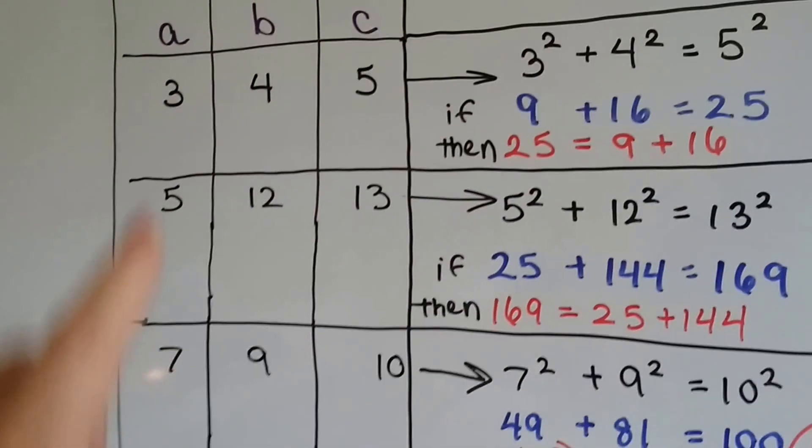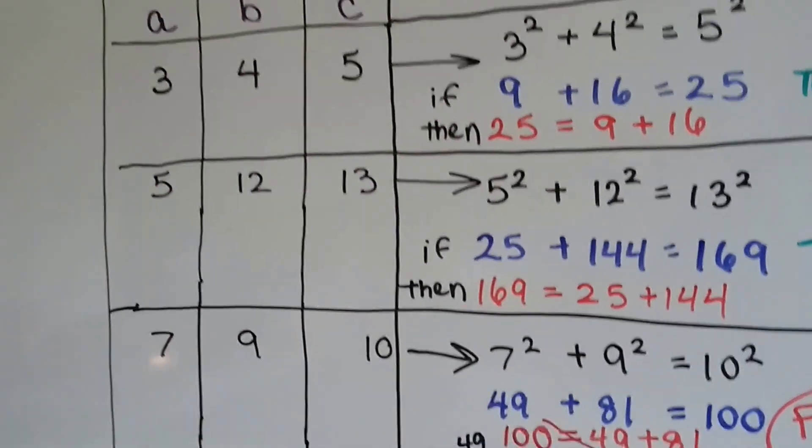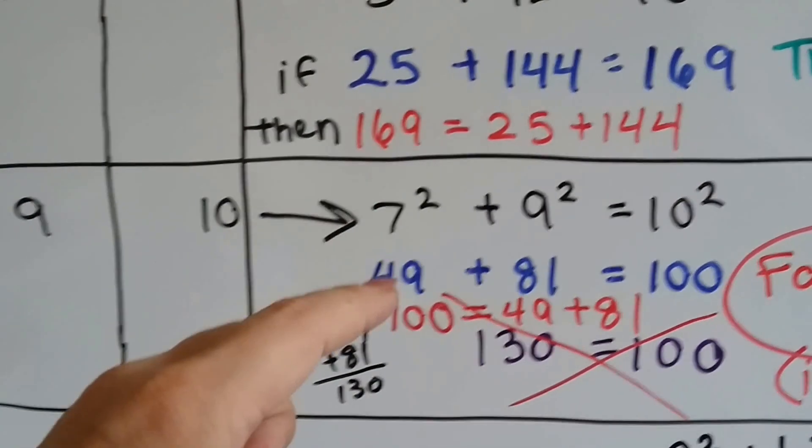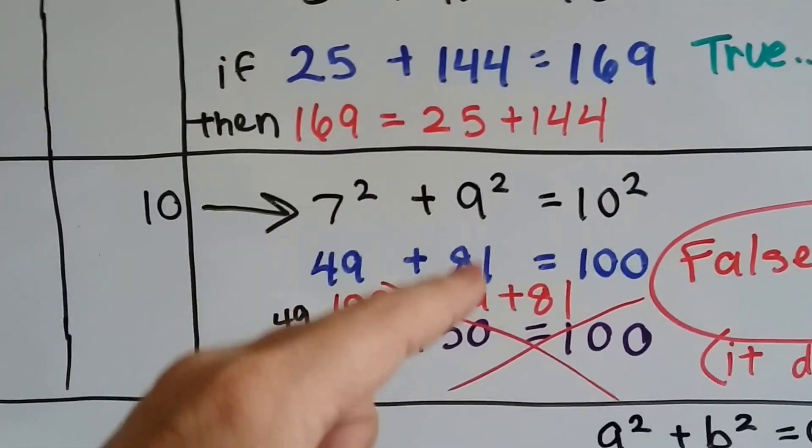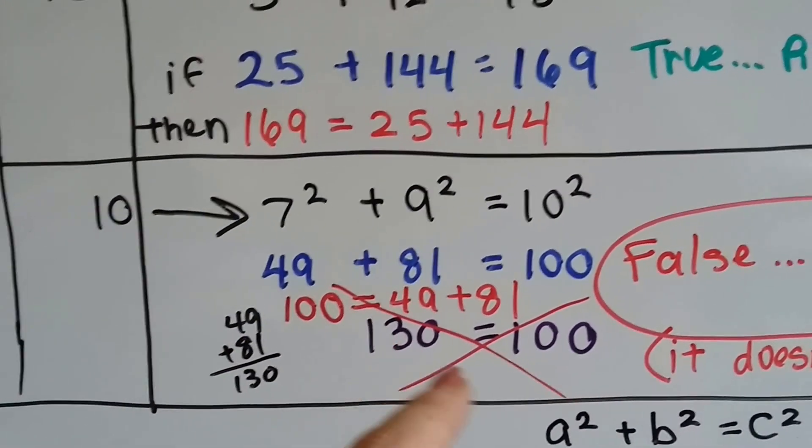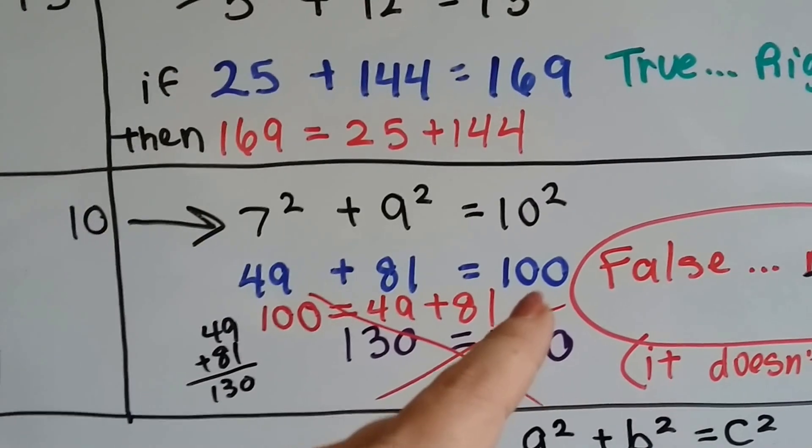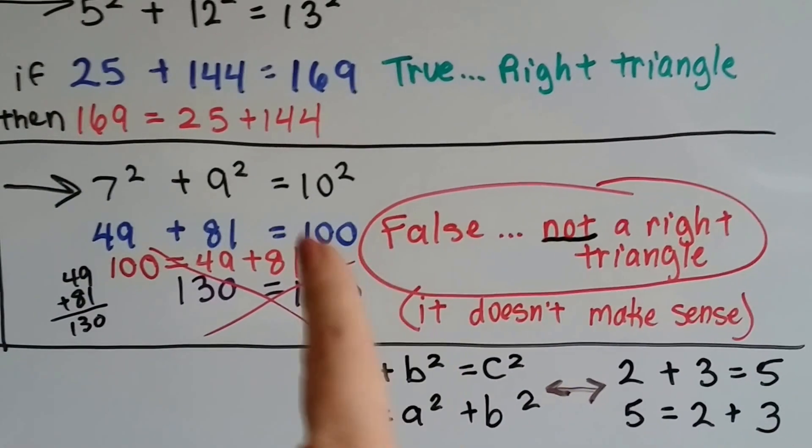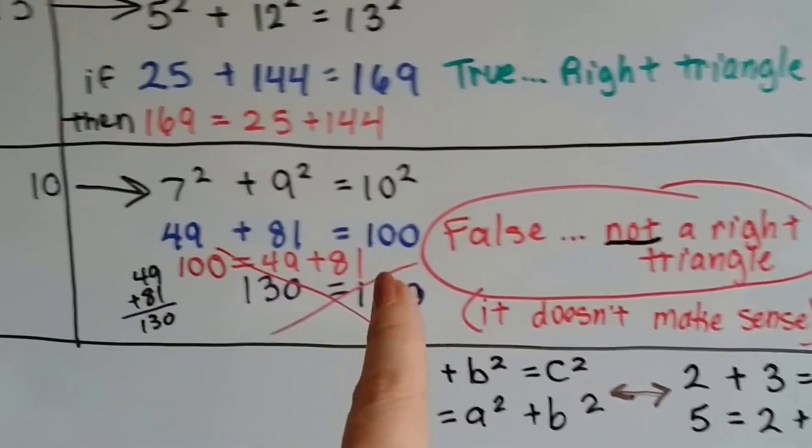Now, what would happen if a, b, and c were 7, 9, and 10? Well, 7 times 7 is 49, 9 times 9 is 81. 49 and 81 is 130. But 10 times 10 is 100. 130 is not equal to 100. So this is false. This is not a right triangle. It doesn't make any sense.